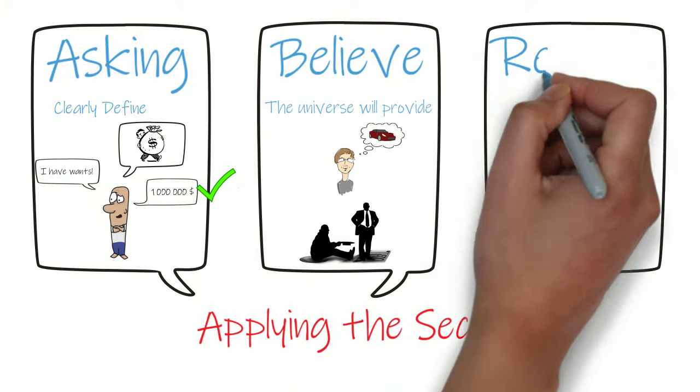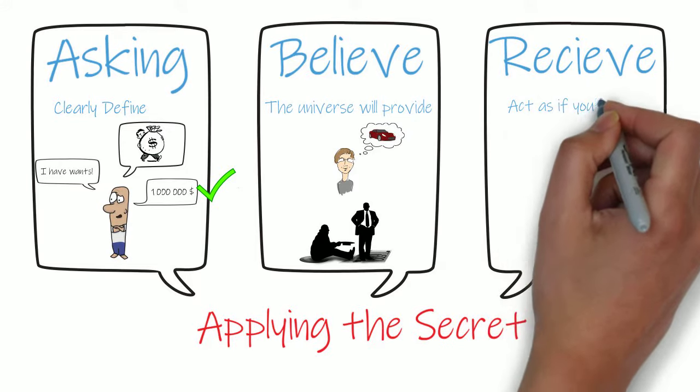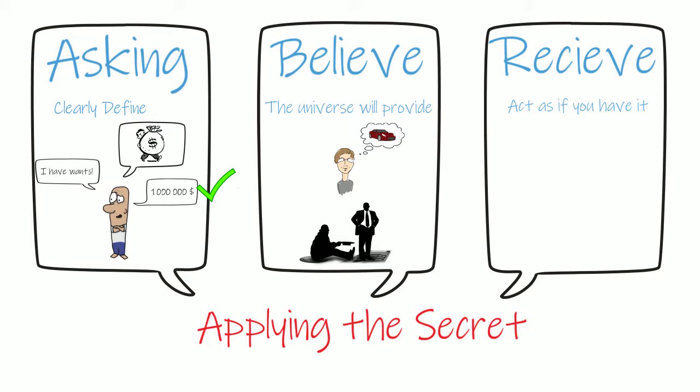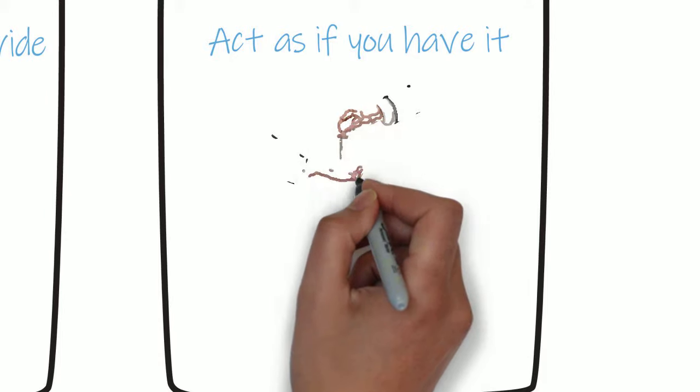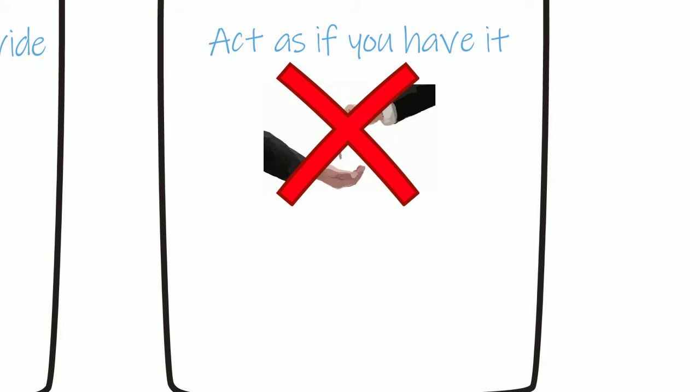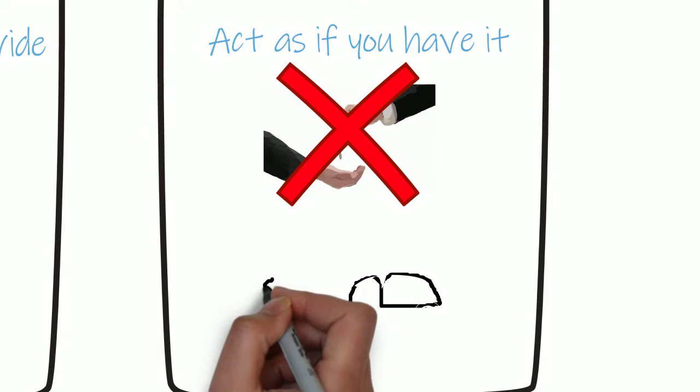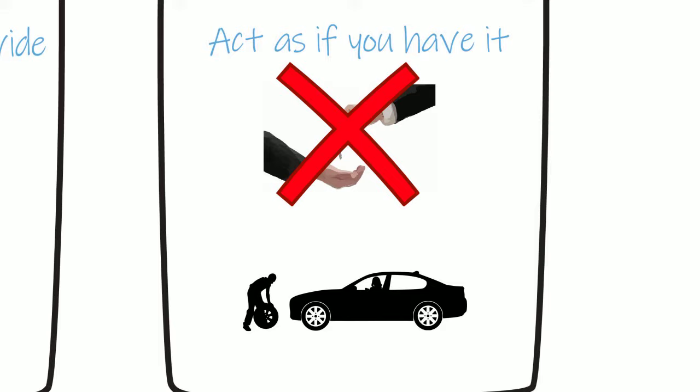The third and final step is receiving. Receiving involves acting as if you have that which you've asked for. This helps to reinforce the belief that you will receive that which you have asked. This does not necessarily mean going out and buying that Ferrari you want, but you could do all the things around what you would have to do after you had the Ferrari, like checking how much insurance will cost and where you're going to do your services.